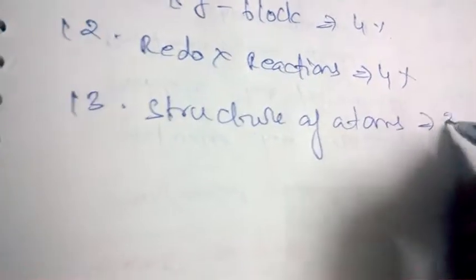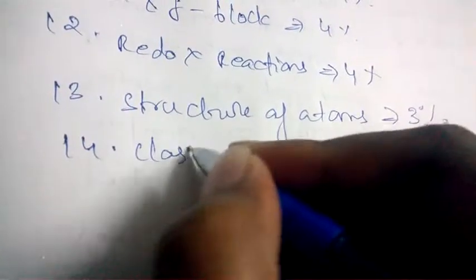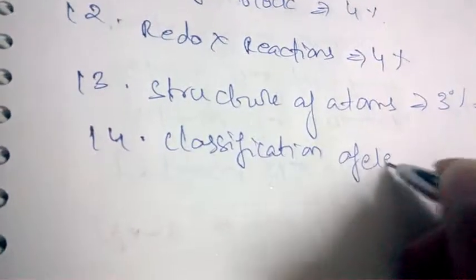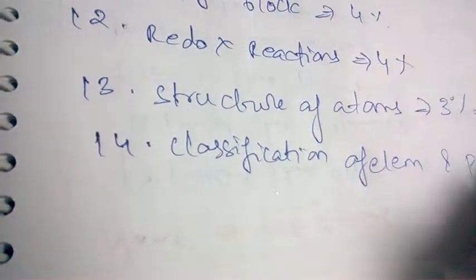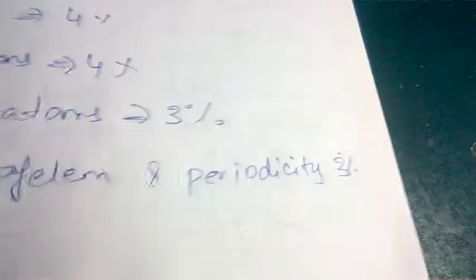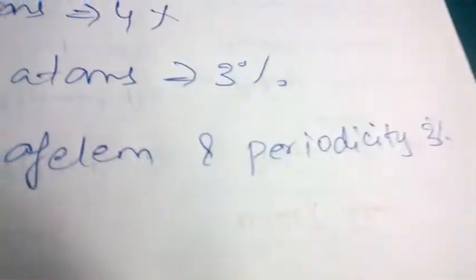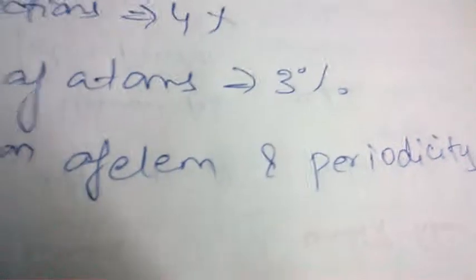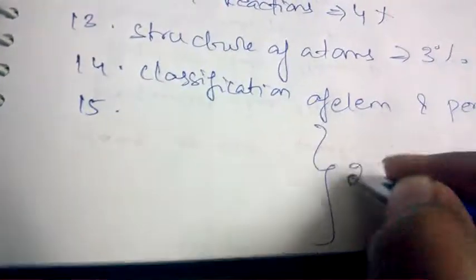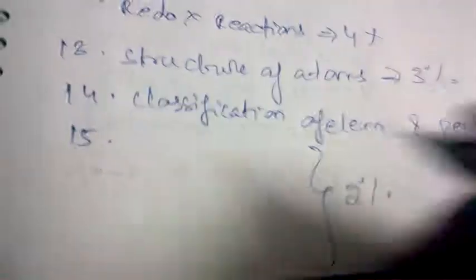Next is structure of atoms — from structure of atoms the weightage is 3%. Next is classification of elements and periodicity of properties — from this particular chapter there is a weightage of 3%. Coming to the least weightage chapters — there are three chapters having the least weightage of 2%.